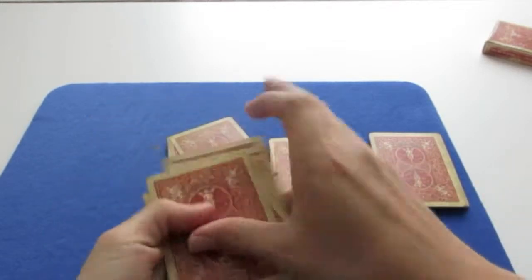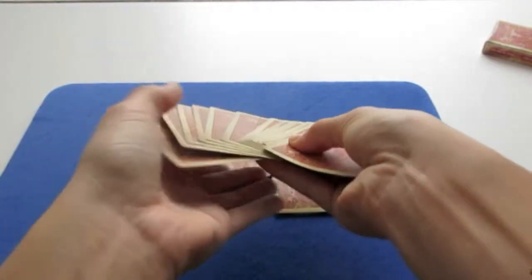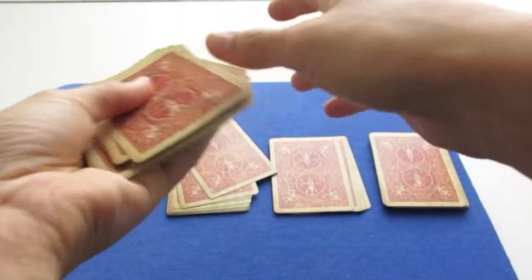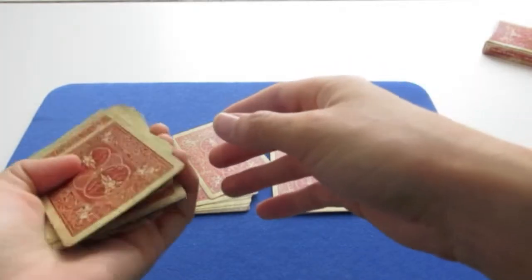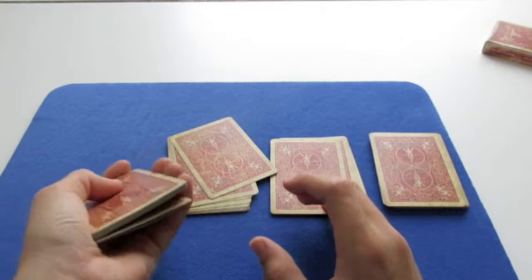So once more, you just spread through the cards. You see the 3 last ones. And what you're going to do, you take your thumb, square up with your fingers on the bottom, help yourself with the other hand, and then just catch pinky break.